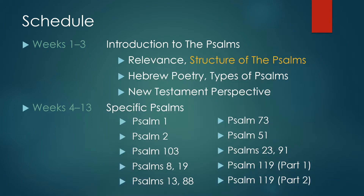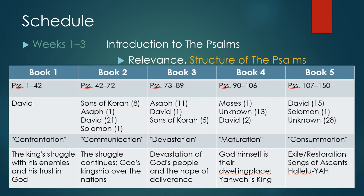We talked about how the Psalms are structured. They're not a random collection — they're actually organized into five books. These books reflect the different eras of Israel. Books one and two reflect the era of David. Book three reflects the era of the captivities by the Babylonians and the Assyrians. Book four reflects the era of the exile, and book five, the restoration coming back from exile.